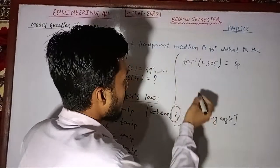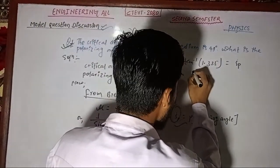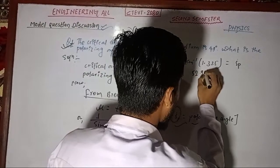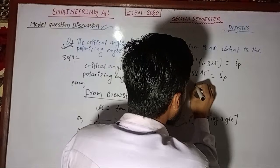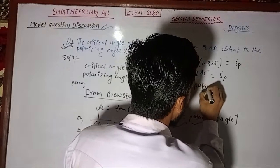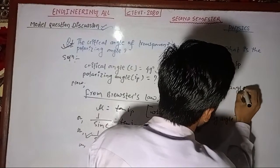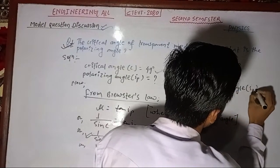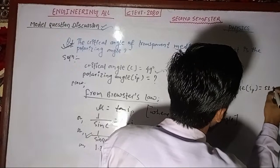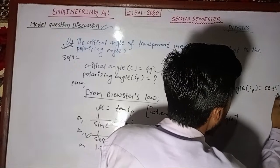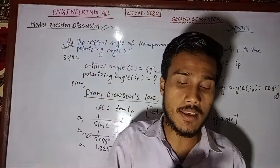Take tan inverse of 1.325. The final answer is 52.95 degrees. Therefore, polarizing angle IP is equal to 52.95 degrees.